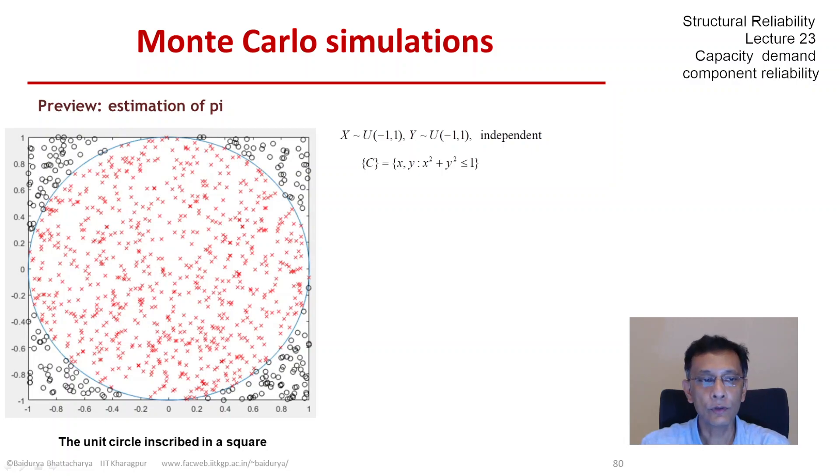Intuitively, and then it can be proved that if the points are indeed generated randomly in that square, then the fraction of points falling within the circle would be related to the ratio of the two areas, the area of the circle to the area of the square. And that gave us the probability of generating points within the circle as pi by 4.